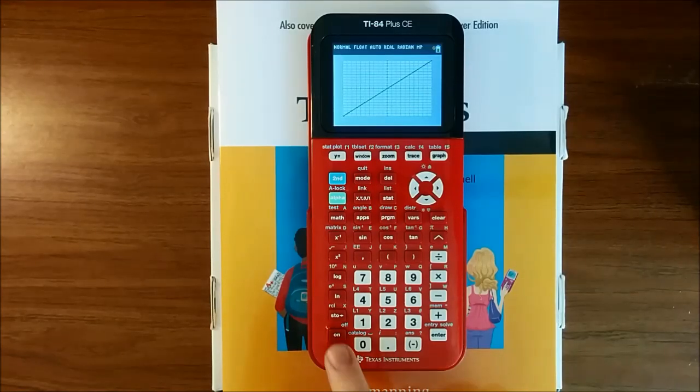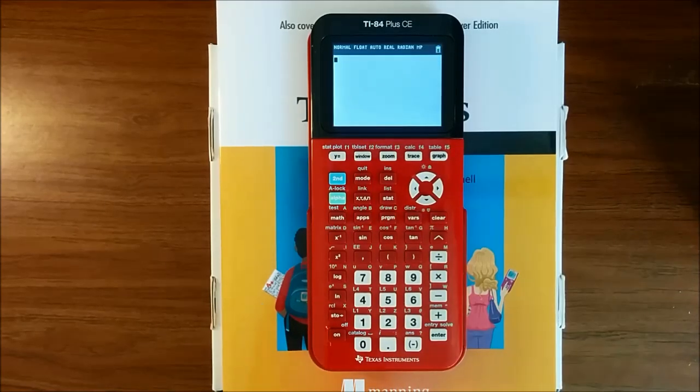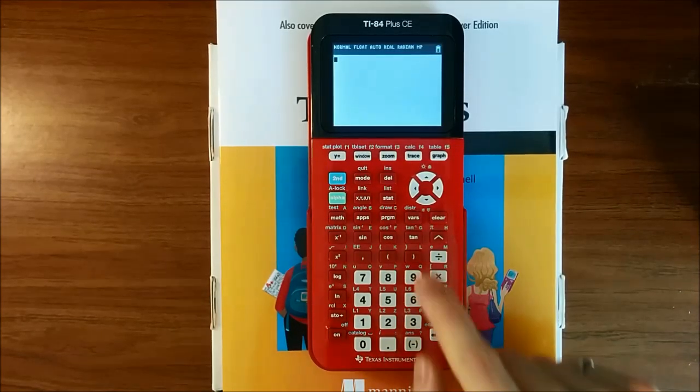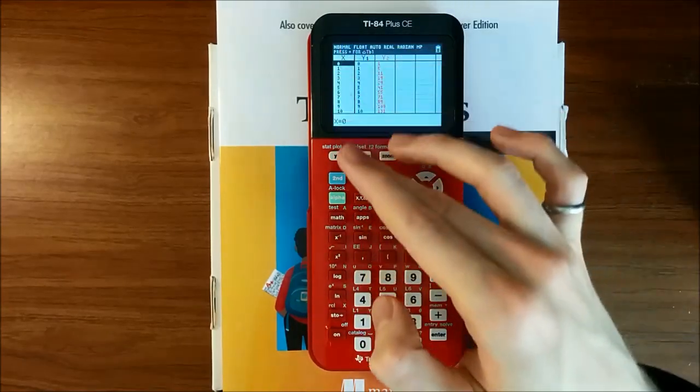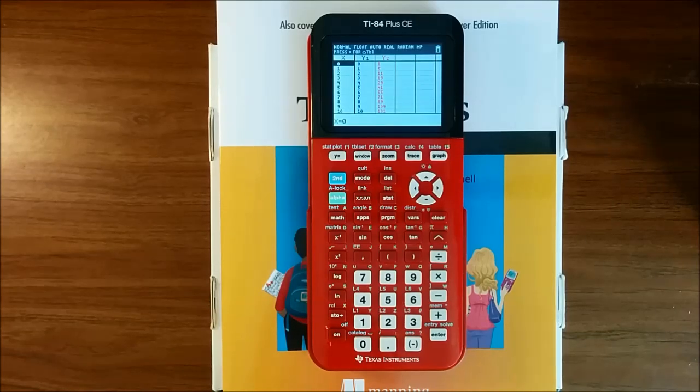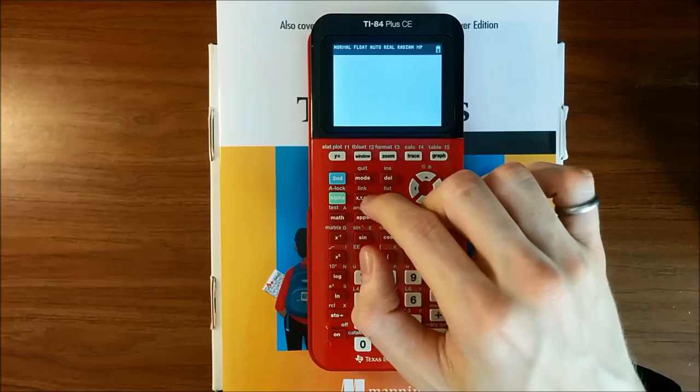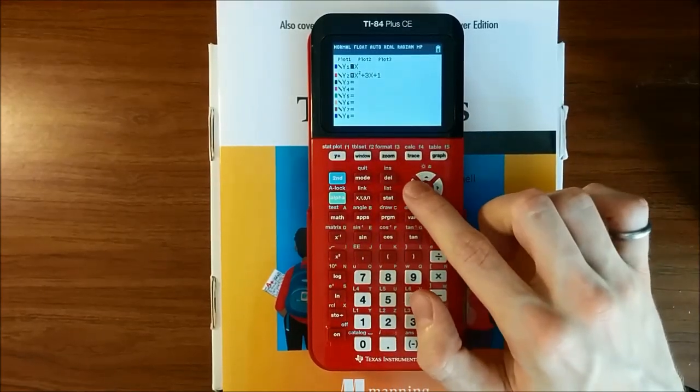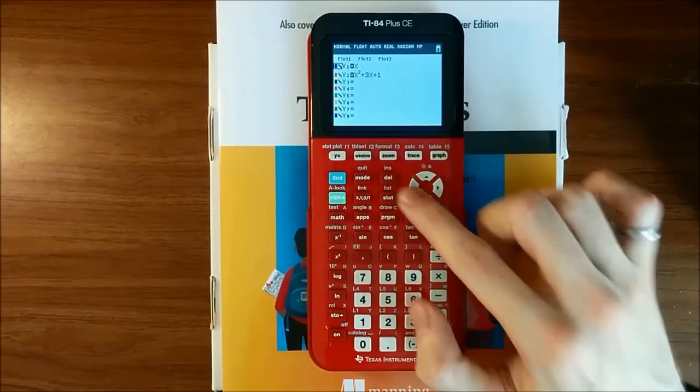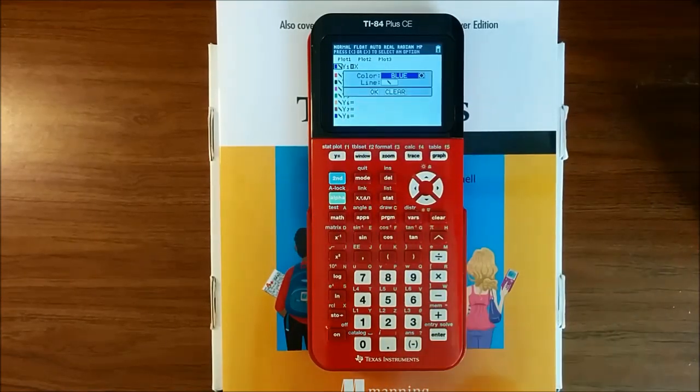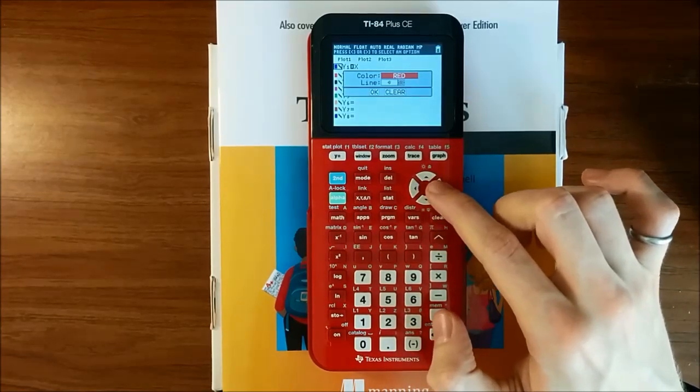If you ever want to interrupt graphing in the middle, by the way, you can press the on key, and the calculator will just stop. Other tools you might find useful are the table in second graph, which shows a list of x-coordinates and the y-coordinates of each of the points in the graphs that you have displayed, as well as the style options for changing the styles of lines. If you move the cursor all the way to the left in the y-equals menu, and press enter, you have the option to change line colors, or change the line type.